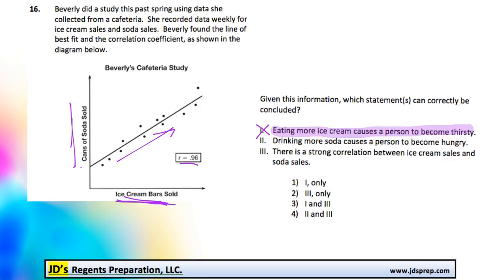The next one, drinking more soda causes a person to become hungry. Well, that's just the exact opposite of the previous example. While we can see that as more people buy cans of soda, more people are buying ice cream.